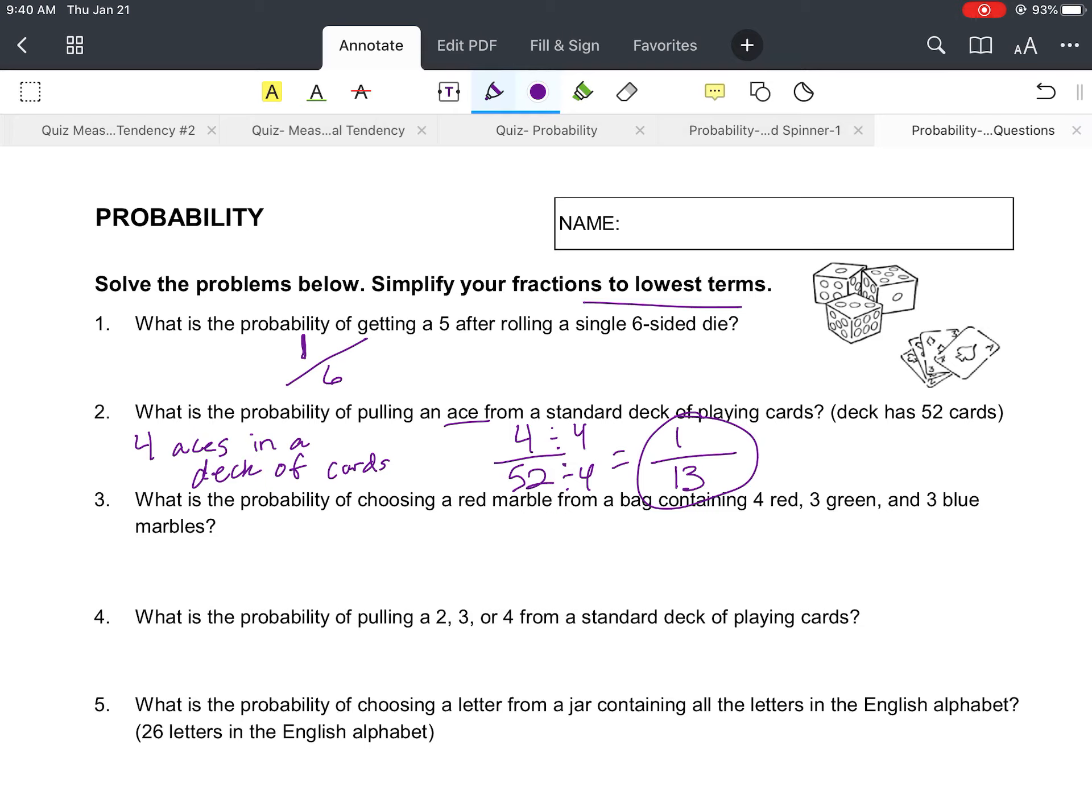Okay, so our simplified probability is 1/13. Number three, it says what is the probability of choosing a red marble from a bag containing four red, three green, and three blue marbles? So let's add up first how many total marbles are in that bag. We've got four, five, six, seven, eight, nine, ten. We have a total of ten marbles.